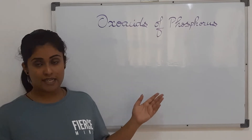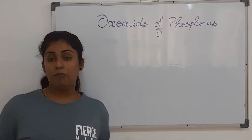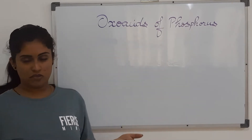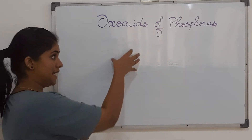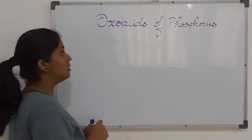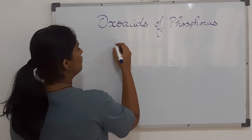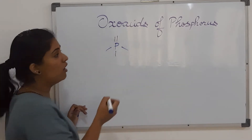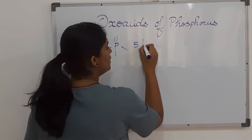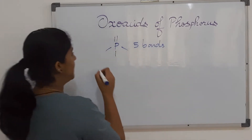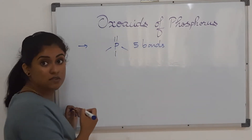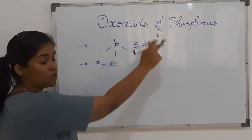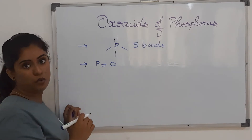Before we move on to drawing the structures, we have to remember some key points. Firstly, all oxoacids of phosphorus will have phosphorus at the center, and around phosphorus there can be a maximum of five bonds. The second point is that all oxoacids of phosphorus have a P double bond O unit — all 10 oxoacids will have a P=O unit.